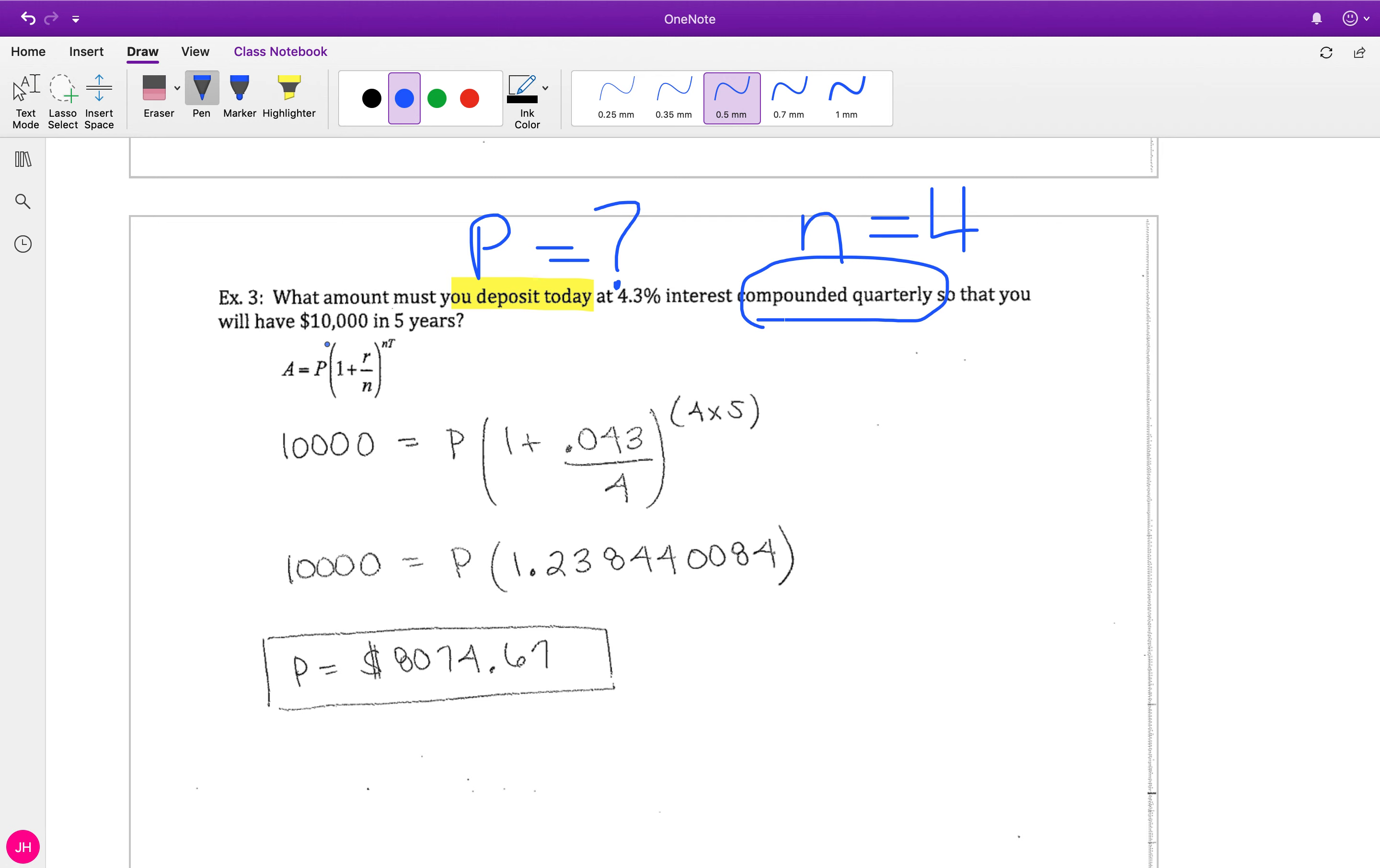They tell me my interest rate, tell me I'm compounding quarterly so n is 4, and they give me this other money amount. They tell me that's how much I want to have, so that's kind of like my goal. So this $10,000 is A, not P. I know that just from really carefully reading the directions and the context clues.